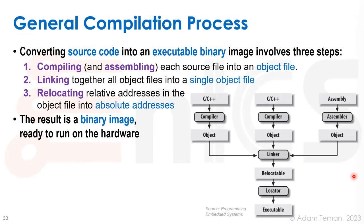Let's start with the general compilation process. We're going to convert source code in some high-level language and turn it into an executable binary in machine code. The first step is to compile, so we take some high-level language, like C or C++, and compile it into an object file.